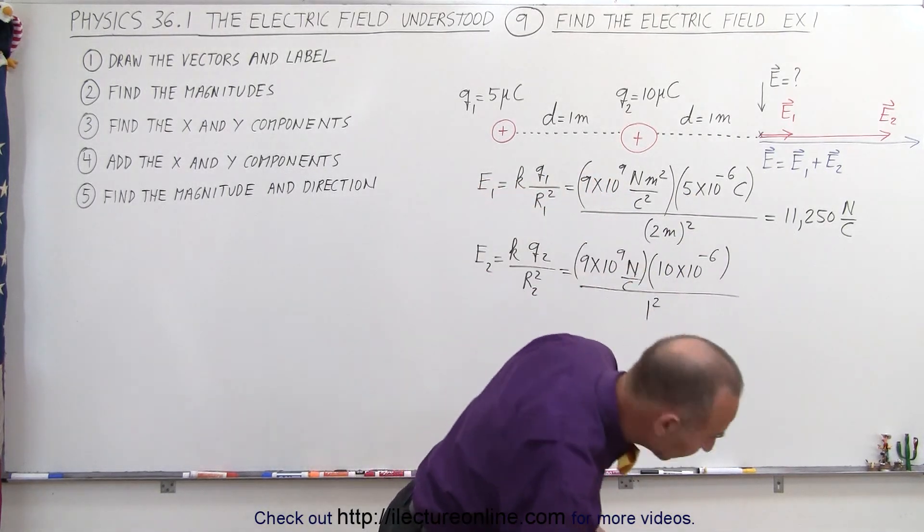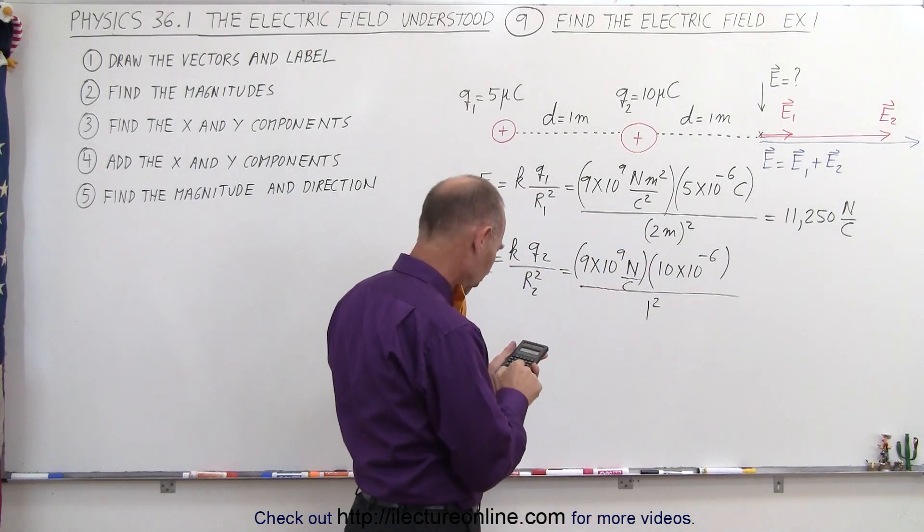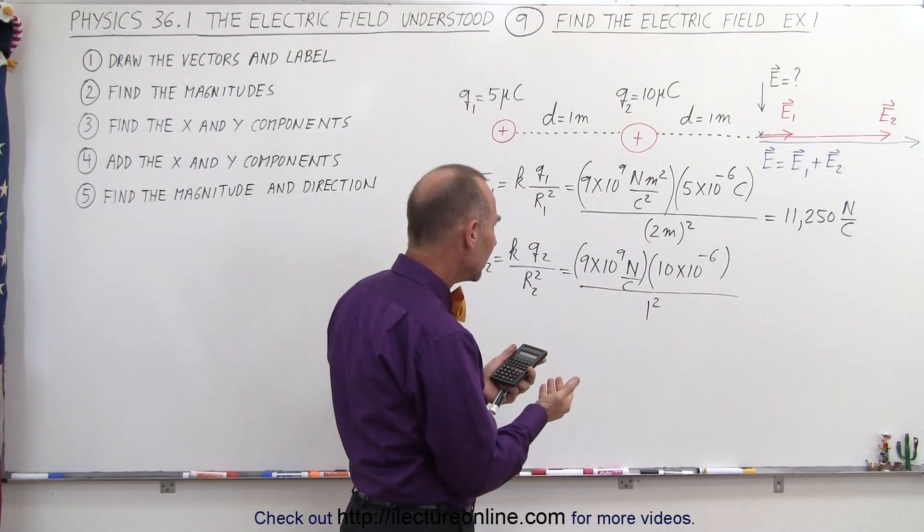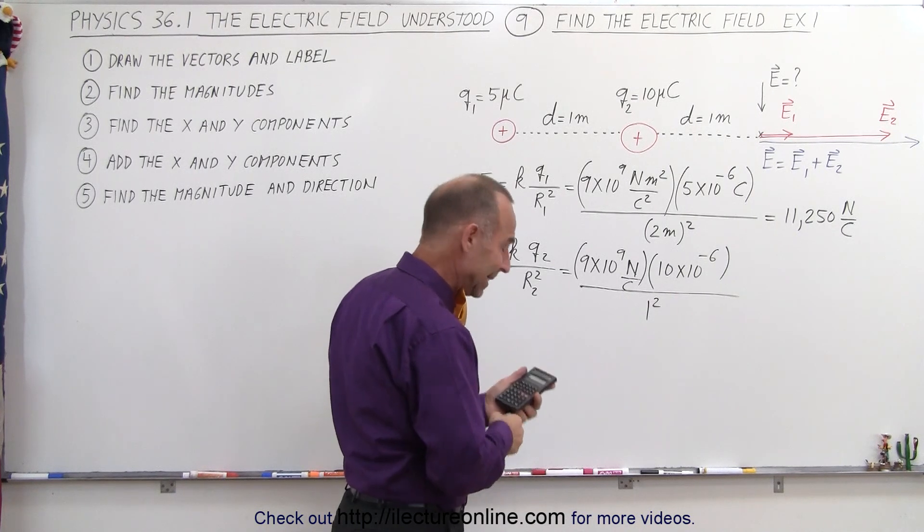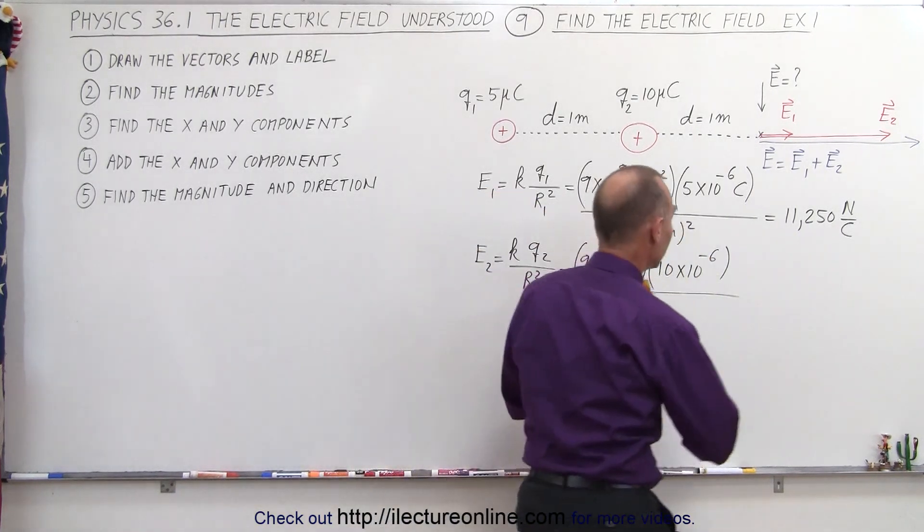In that case, we have twice the charge so double that, and we have one quarter the distance so times 4, and that will be 90,000 newtons per coulomb.